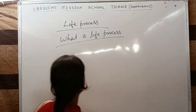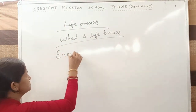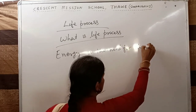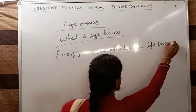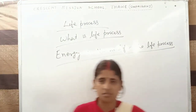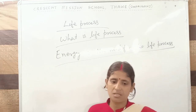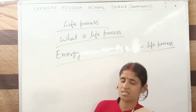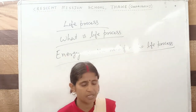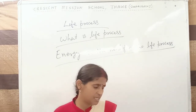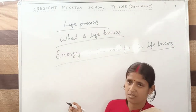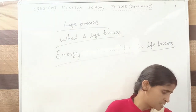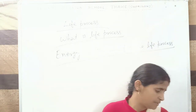What is the essential thing needed for life process? Energy. Energy is needed for life process. No any life process can occur without energy, because in digestion we need energy, in respiration we need energy, in nutrition we need energy, in excretion, transport, control and coordination, and reproduction also we need energy.